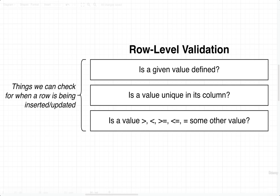We're going to take a look at three different forms of row level validation. Row level means we are trying to validate a row or the information inside of a row whenever it is being inserted or updated in a table. The three ways we can validate a row: make sure a given value is defined, make sure a value is unique inside its column, and apply more flexible validation using greater than, less than, equal to, and so on.